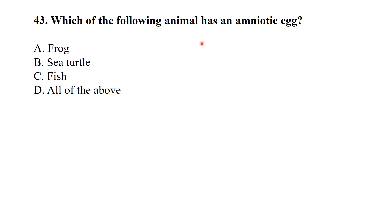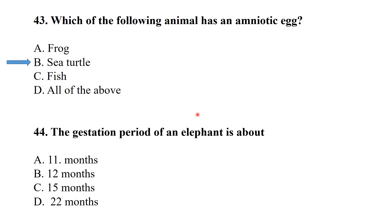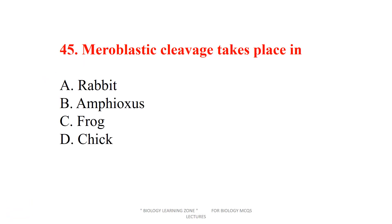Which of the following animals has an amniotic egg? — Sea turtle has an amniotic egg; that is a reptile. The gestation period of an elephant is the largest — about 22 months. The last question: meroblastic cleavage takes place in the chick.